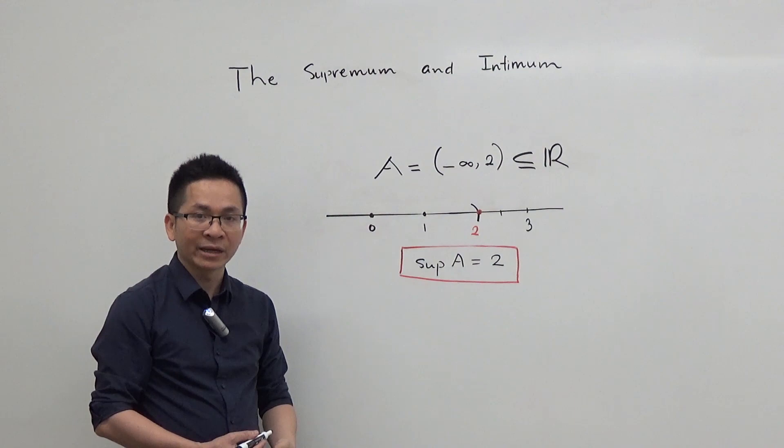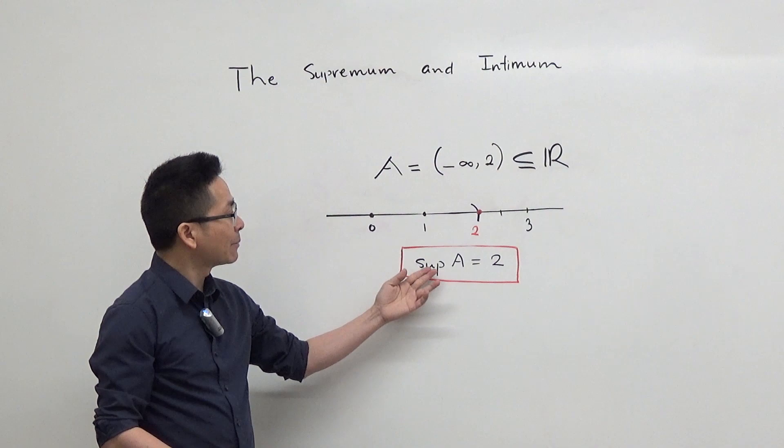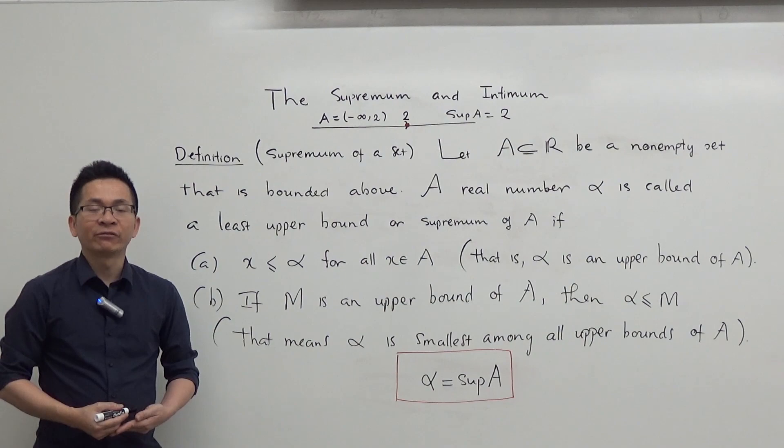So people call it the least upper bound of A, or the supremum of A. Again, in this example, the supremum of A is 2.